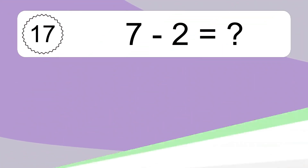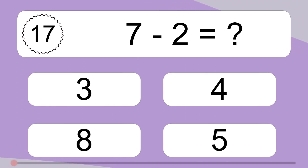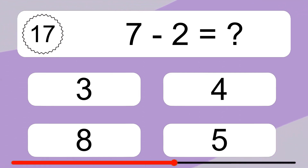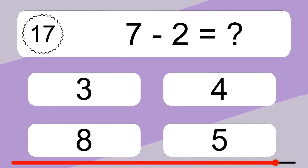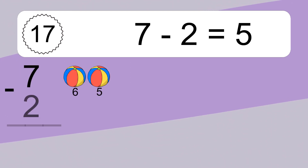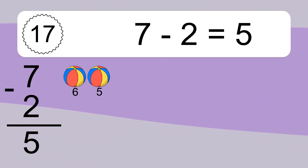7 minus 2 equals what? 7 minus 2 equals 5. Let's count it. 6, 5.